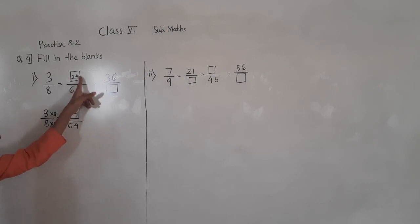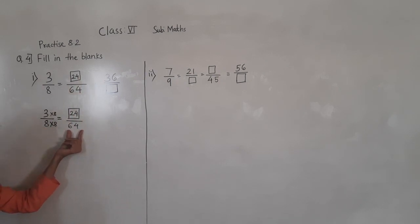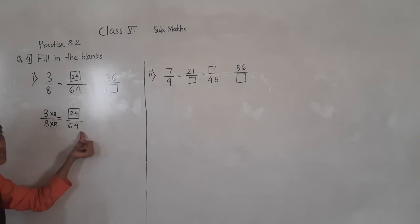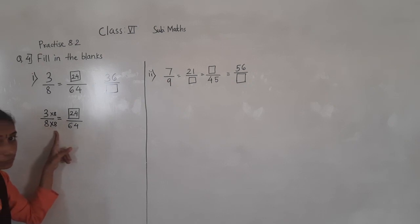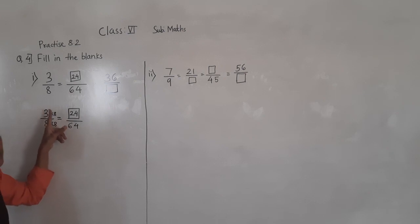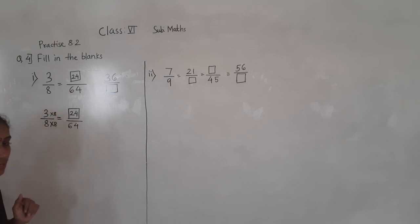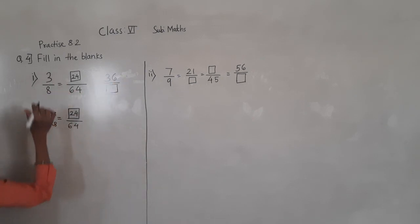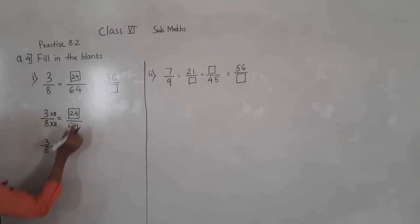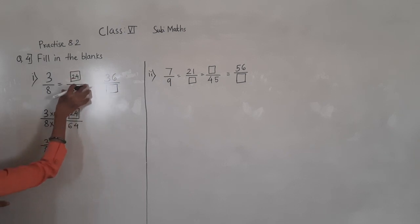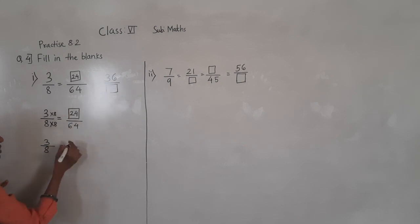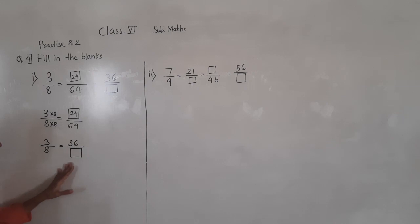So what we got here: 24. Since 64 is given and 8 eights are 64, we multiply by 8 for the denominator, and same way we multiply by 8 for the numerator also — so 3 eights are 24. Now the given fraction is 3 upon 8 is equal to 36 upon blank box.